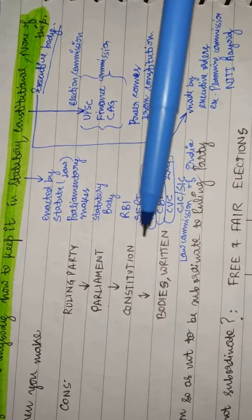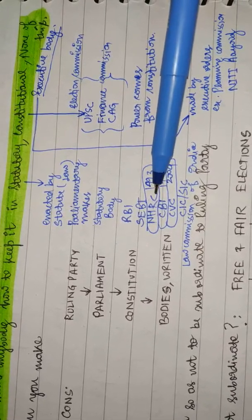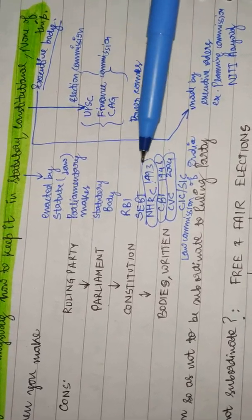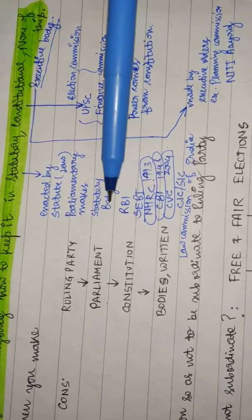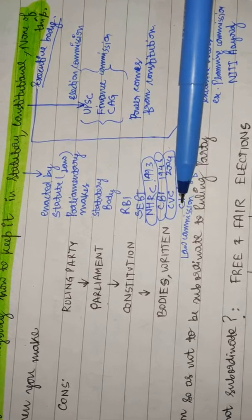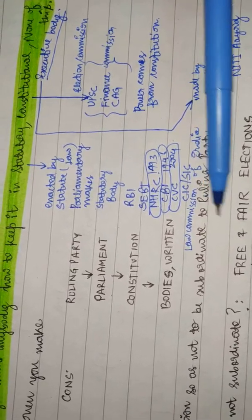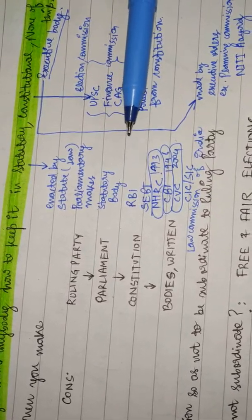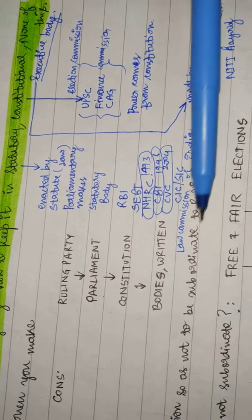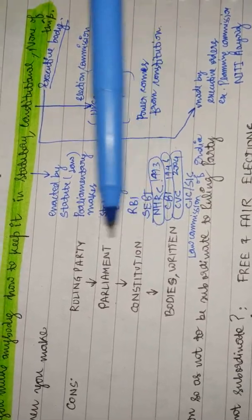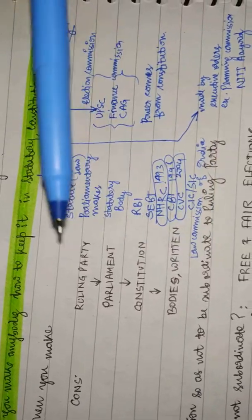National Human Rights Commission was made from NHRC Act 1993. RBI Act, CBI Act, CIC Chief Information Commission was made from RTI Act 2005. Law Commission of India was made from forming a parliamentary law.